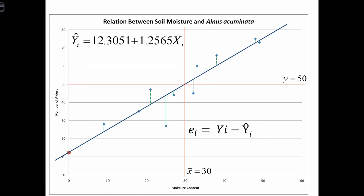Recall from last class that we estimated a regression model to predict values of the number of alders based on the moisture content in an area of land. In this case, the regression slope was 1.2565, and the constant was about 12.3.